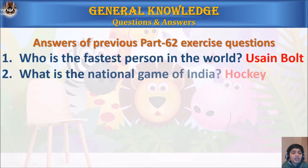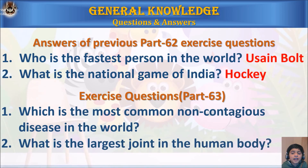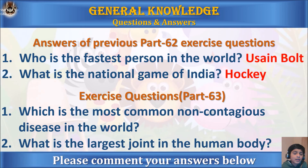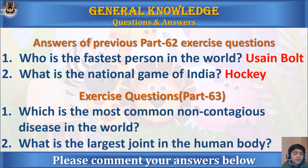Here are the answers from the previous part 62 exercise questions. Question 1: Who is the fastest person in the world? The answer is Usain Bolt. Question 2: What is the national game of India? The answer is hockey. Now here are the exercise questions for part 63: Question 1 — which is the most common known contagious disease in the world? Question 2 — what is the largest joint in the human body? Please find and comment your answers below.